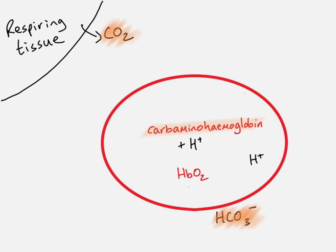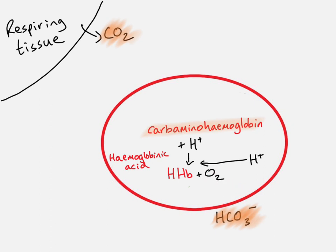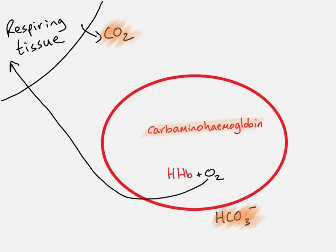There is also hemoglobin already bound with oxygen — oxyhemoglobin. The hydrogen ions produced from the formation of carbaminohemoglobin and those produced when carbonic acid dissociated both combine with the oxyhemoglobin. This forms something called haemoglobinic acid, and that process causes a change in the shape of the molecule, so oxygen is released. The released oxygen diffuses out of the red blood cell into the blood plasma and then into the respiring tissue, where it is needed for aerobic respiration.